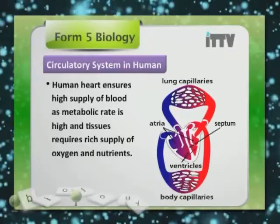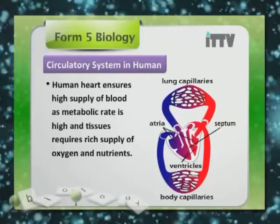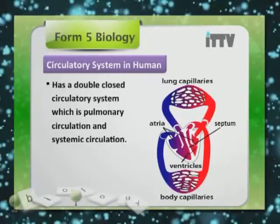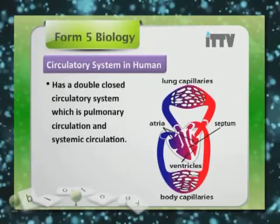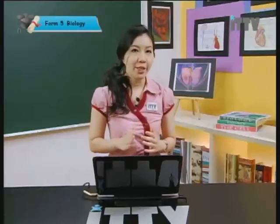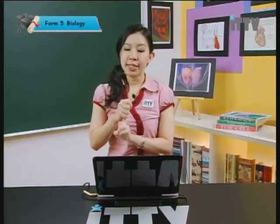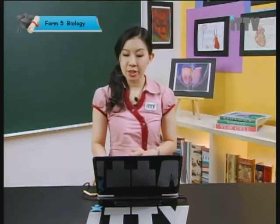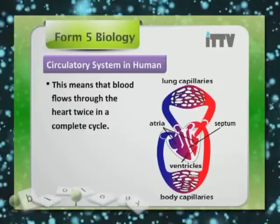The human heart ensures a high supply of blood, as metabolic rate is high and tissues require a rich supply of oxygen and nutrients. The circulatory system in humans has a double closed circulatory system, which is the pulmonary circulation system and the systemic circulation system.